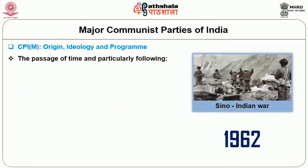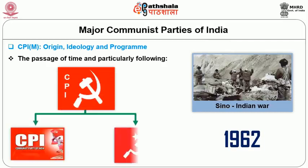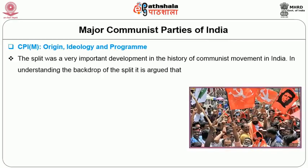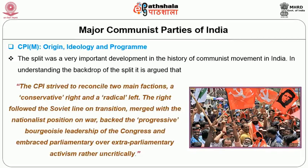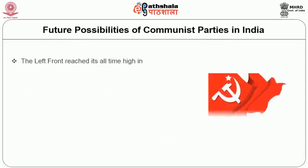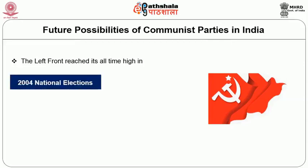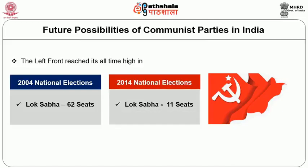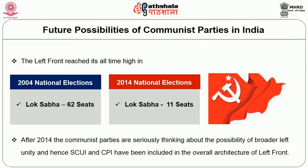With the passage of time and particularly following the Sino-Indian War of 1962, the CPI was divided into CPI and CPI-M. This split was a very important development in the history of the communist movement in India. In understanding the backdrop of the split, it is argued that the CPI strived to reconcile two main factions — a conservative right and a radical left. The right followed the Soviet line on transition, merged with a nationalist position on war, backed the progressive bourgeoisie's leadership of the Congress, and embraced parliamentary over extra-parliamentary activism rather uncritically. The left front reached its all-time high in the 2004 national elections, securing 62 seats in the Lok Sabha, but within a decade it shrank to 11 seats in the 2014 Lok Sabha election. After 2014, the communist parties are seriously thinking about the possibility of broader left unity, and hence SUCI and CPI-ML Liberation have been included in the overall architecture of the left front.